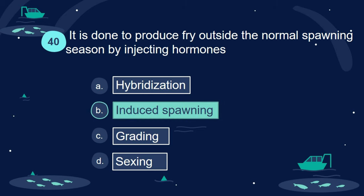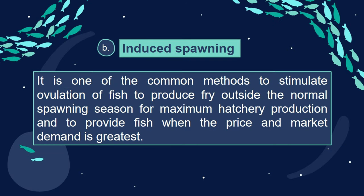Answer: B. Induced spawning. It is one of the common methods to stimulate ovulation of fish to produce fry outside the normal spawning season for maximum hatchery production and to provide fish when the price and market demand is greatest.